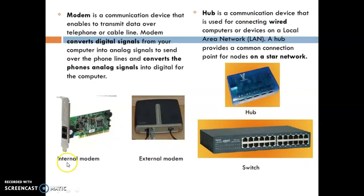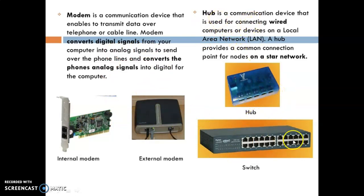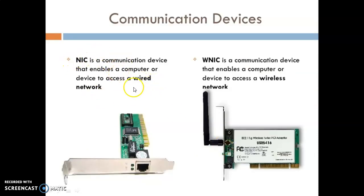Switches are similar to hubs but the difference is that while hubs broadcast messages to all devices, switches communicate one-to-one — a sender message goes directly to the receiver at the destination point. We also have modems, which can be internal or external devices that modulate and demodulate signals, converting digital data to analog signals and vice versa. Finally, hubs and switches have many ports for connecting many computer systems. NIC is a wired network interface card in your computer system, and WNIC is for wireless connections. This is all about communication devices used in our network.